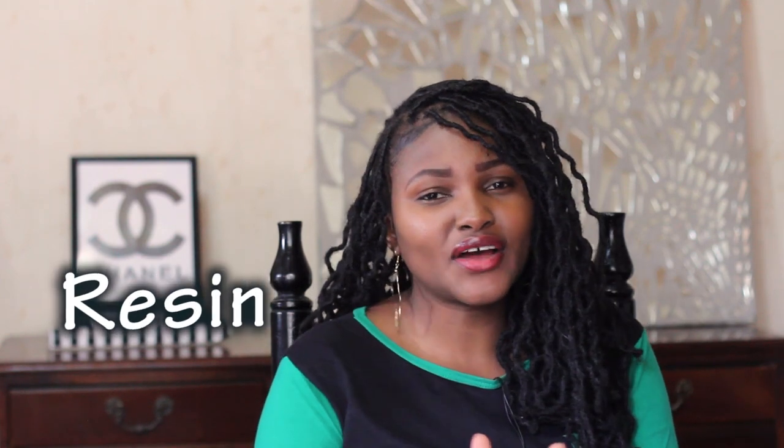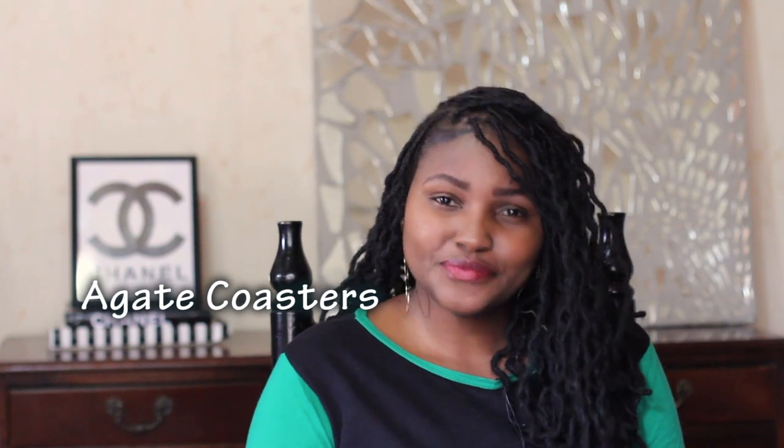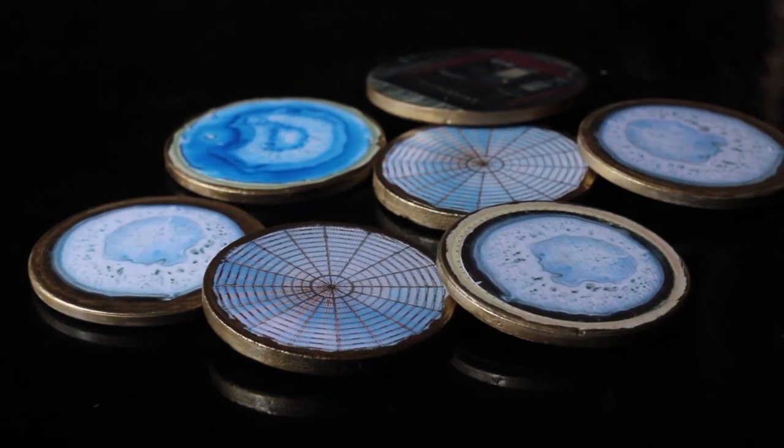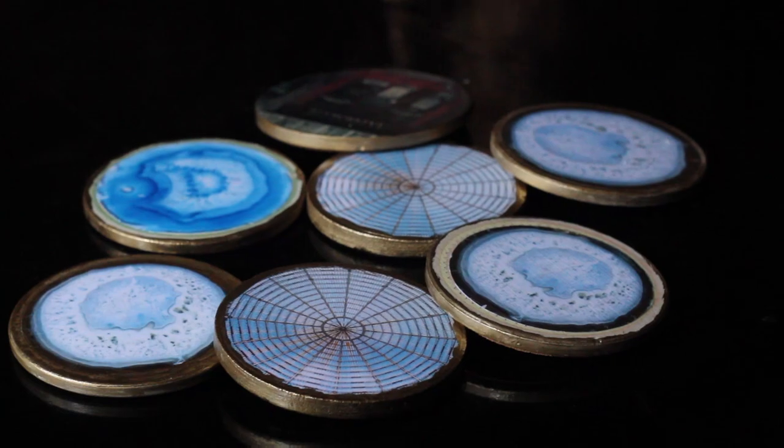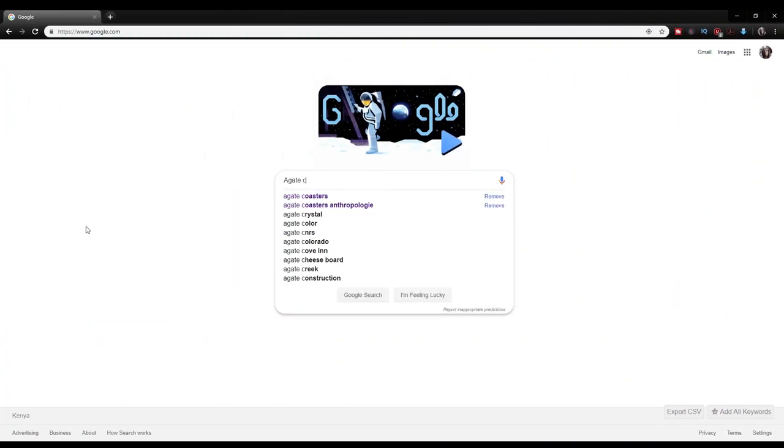When I got the coasters, I had agate coasters in mind, but the thing with agate coasters is they're made using resin and resin is not locally available. So I thought maybe I could use the coasters and make something that would resemble the agate coasters. In this video I'll show you how I made my faux agate coasters.